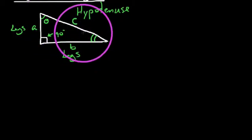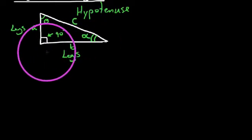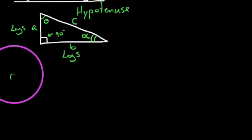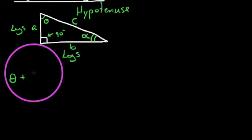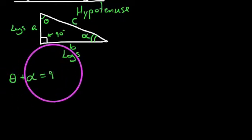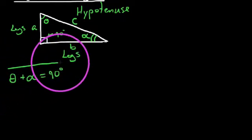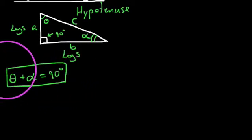So it is fair to say this: if we were to say theta and alpha are two angles, it is fair to say that in every right triangle, theta plus alpha, or the sum of the two acute angles, must be 90 degrees. In other words, the two acute angles in a right triangle are complementary angles.